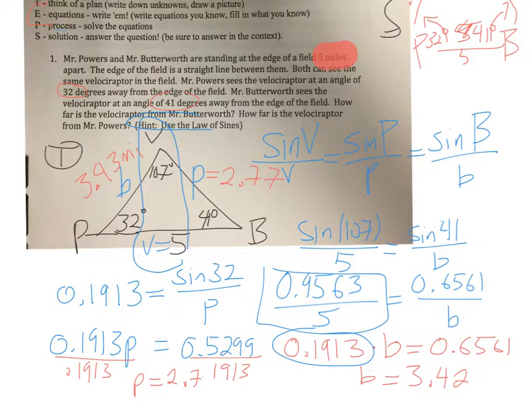Finally, the solution, we've got to answer the question in context. So I would say that the velociraptor is 3.43 miles away from Mr. Powers and 2.77 miles away from Mr. Butterworth.